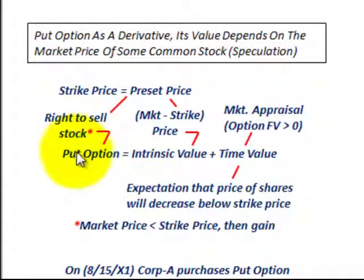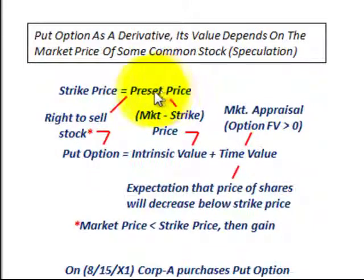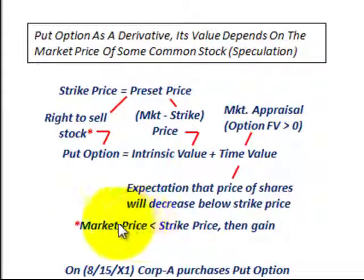So what is a put option? That's an option that you would purchase, and it would give you the right to sell a specific stock based on its preset price, or what they refer to as its strike price. What you're trying to accomplish with this put option is looking at the market price of the stock being less than the strike price — then you'd have a gain.